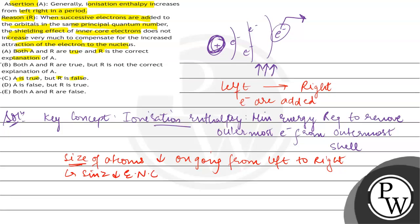Effective nuclear charge increases. The force of attraction is more, so it will be difficult to remove the electron. So you need to provide more ionization enthalpy.